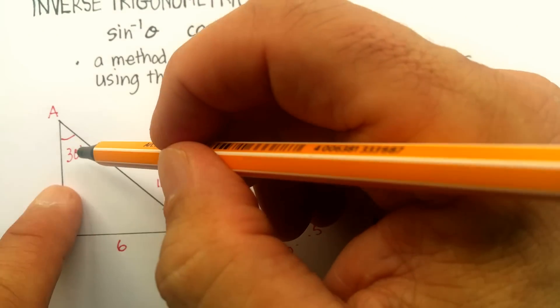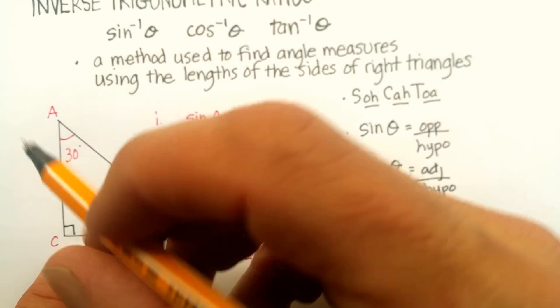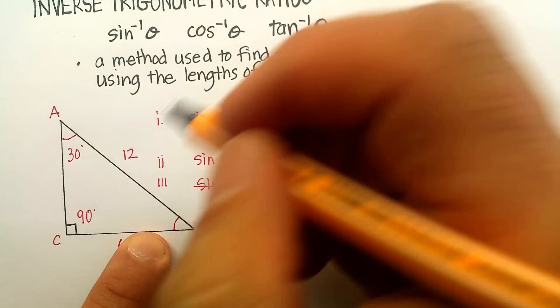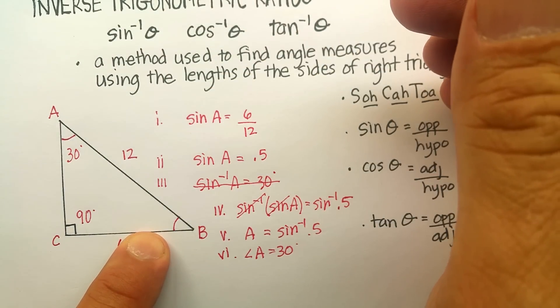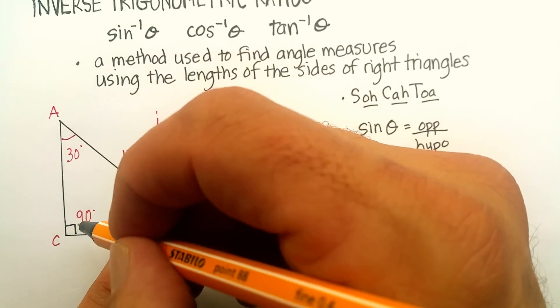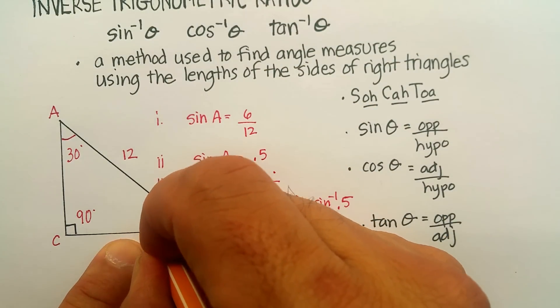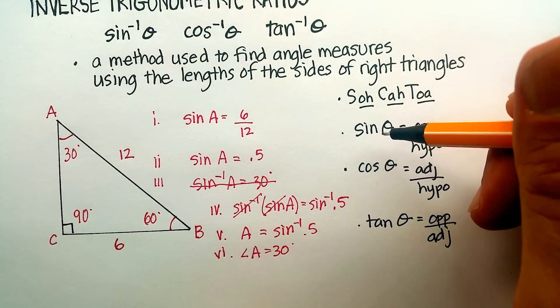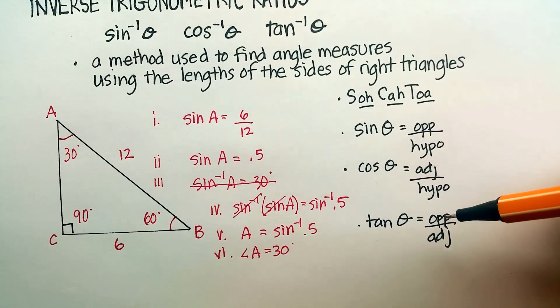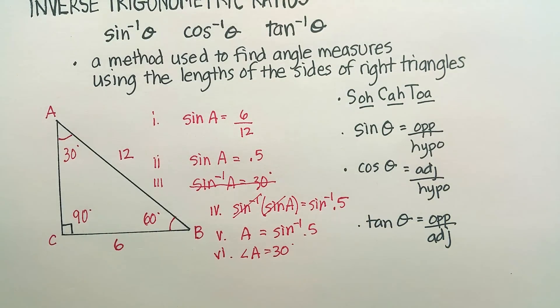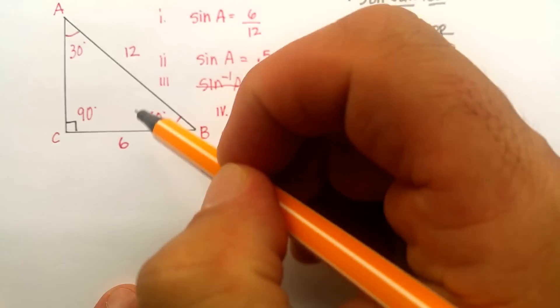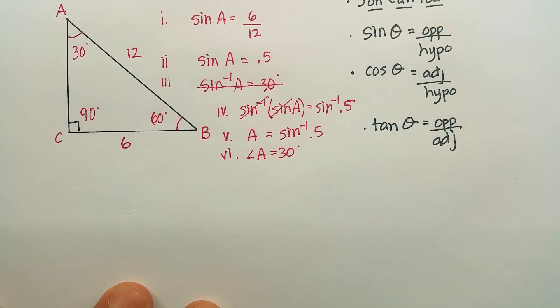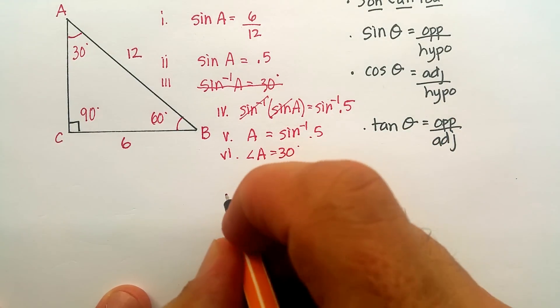And I know now that if angle A is 30 degrees, this is 90 degrees, I can figure out the third angle simply by using the triangle sum theory. I know that's 120, there's 180, so this would actually be 60 degrees. Now, I could have used cosine, I could have used tangent as well. Let me just do one more example using the same values here. I'm just going to use one of these other functions to show you how it could have worked.